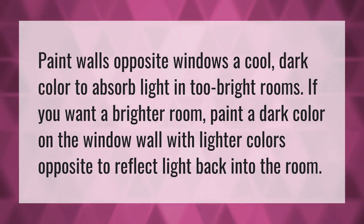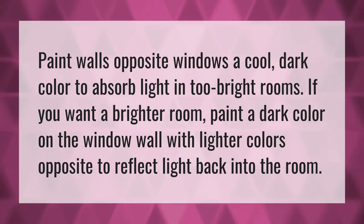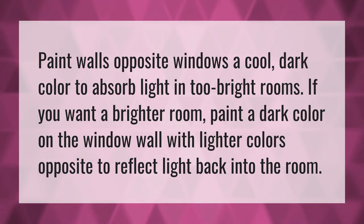Paint walls opposite windows a cool, dark color to absorb light in too-bright rooms. If you want a brighter room, paint a dark color on the window wall with lighter colors opposite to reflect light back into the room.